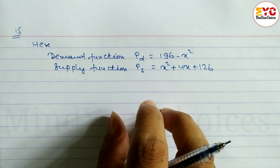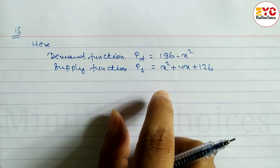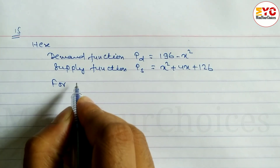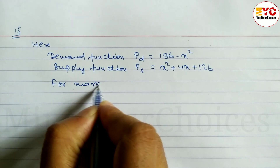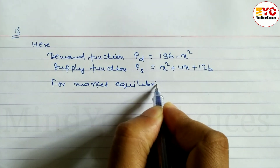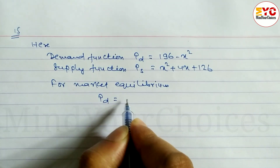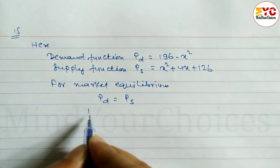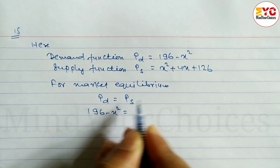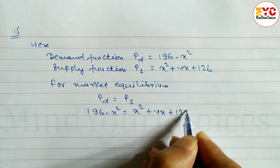For Market Equilibrium, the Demand Function equals the Supply Function, so PD is equal to PS. Demand is equal to Supply, so we can write: 196 minus x squared is equal to x squared plus 4x plus 126.